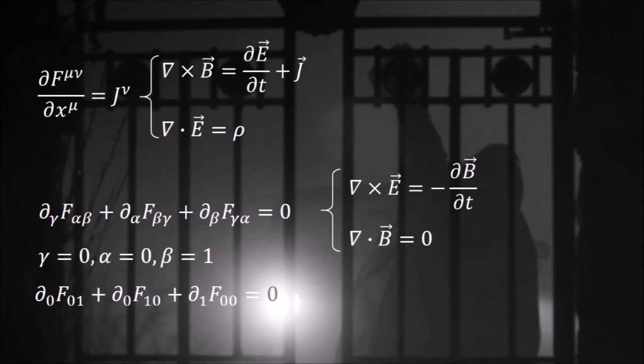Here's what I mean. Take gamma equals to zero, alpha equals to zero, and beta equals to one. Since F is antisymmetric, these two terms cancel, and F is just zero. So this statement, while true, tells us absolutely nothing. It's equivalent to saying two equals to two.